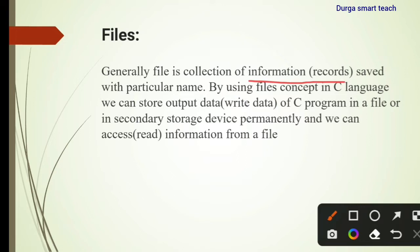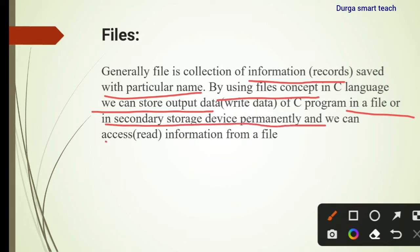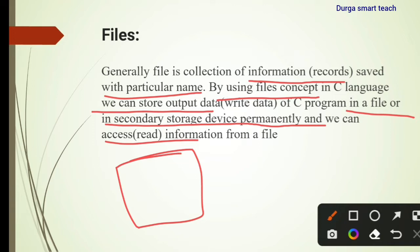Information in the sense of records. Every file will be saved with a particular unique name. By using files concepts in C language, we can store output data. We can write data into the files or we can read data from the files on secondary storage devices permanently.